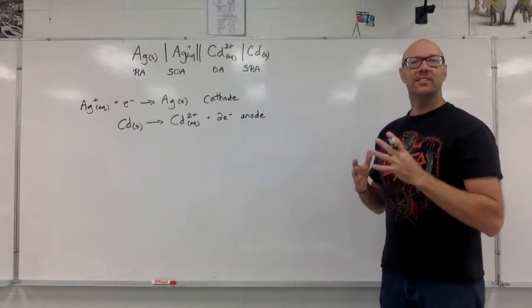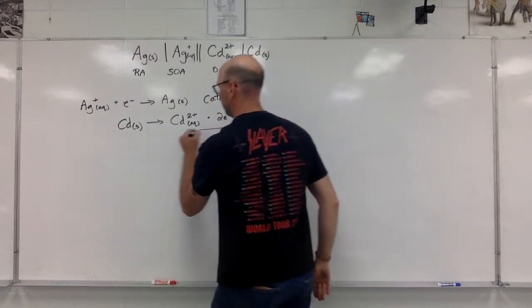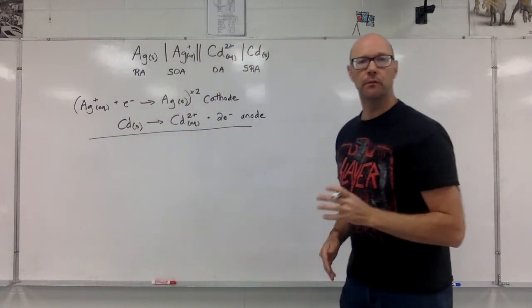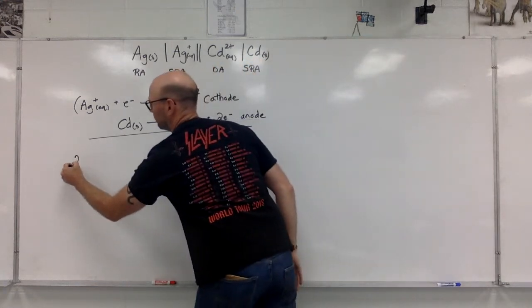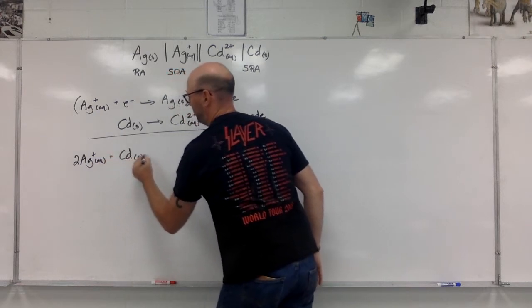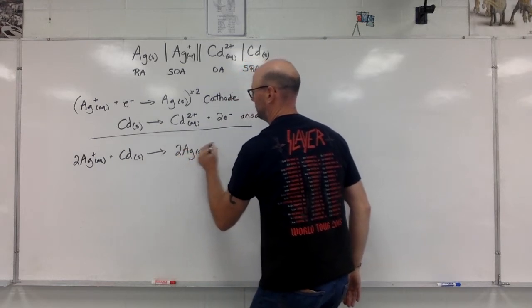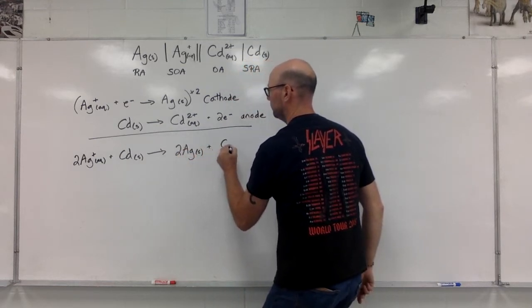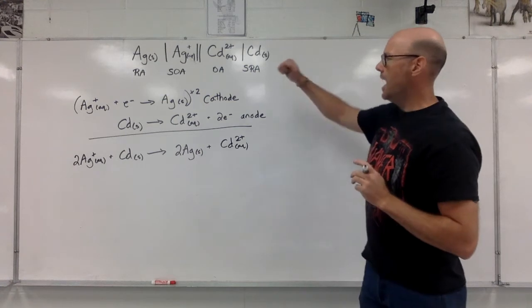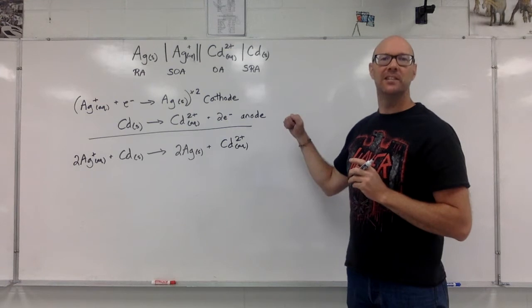To find that net cell reaction, I'm going to balance the electrons here. I have to multiply the silver half reaction by two. I have the cathode half reaction, the anode half reaction, and now the net cell reaction.